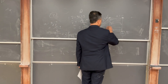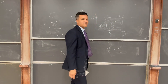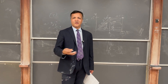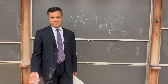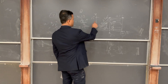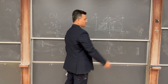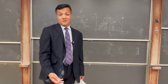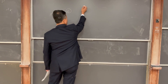Problem eight asks what physical quantity is represented by the shaded area. Since this is a velocity versus time graph, the area under the curve is displacement. If it were a speed versus time graph, the area would be distance — but because it's velocity versus time, the area represents displacement.